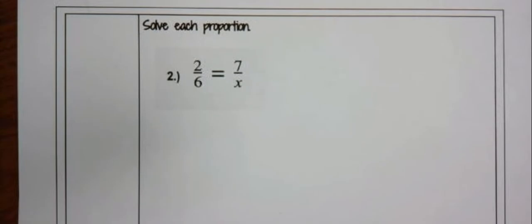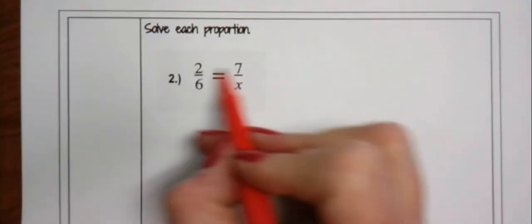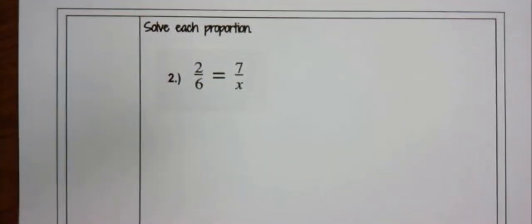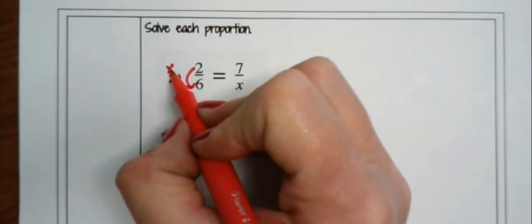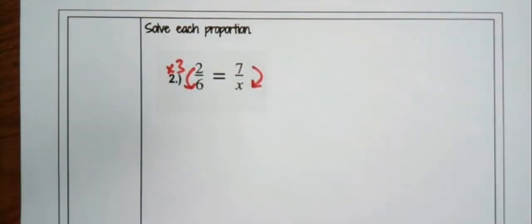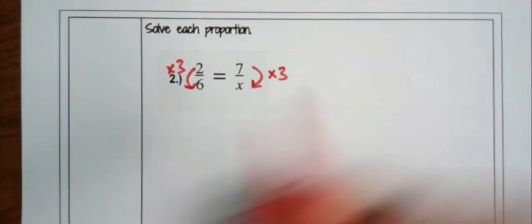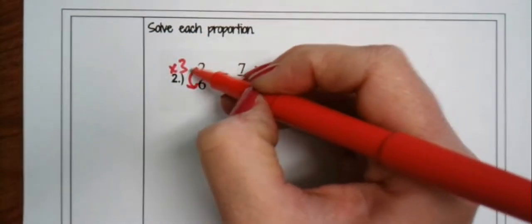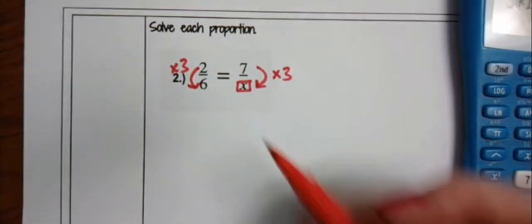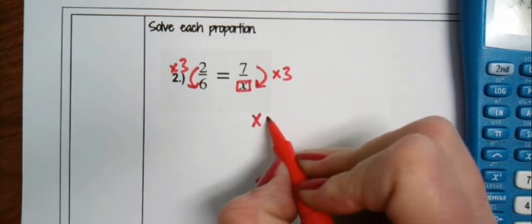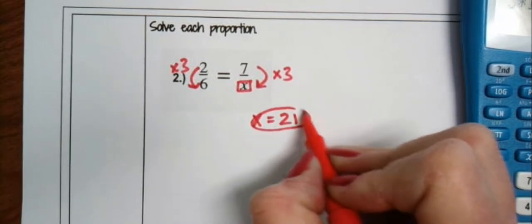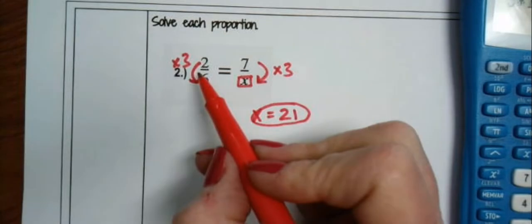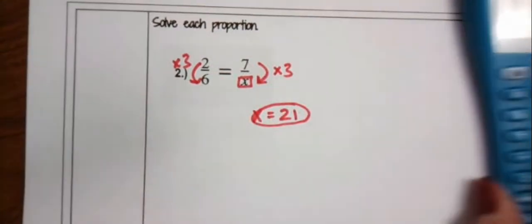Let's try number two: 2 is to 6 as 7 is to x. Do you see a relationship — not horizontally, but vertically? To get from 2 to 6, you times 3. Then to get from 7 to x, I can also times 3. Notice my missing value was in the denominator, so I needed to go top to bottom here as well. Seven times 3 is 21, and x equals 21. The denominator was just triple the size of the numerator.